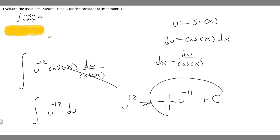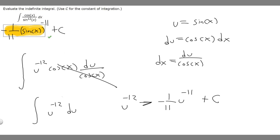Now that we've got this, all we've got to do is replace u with what we chose u to be, which is sine of x. If we go ahead and do that, we'll get minus 1 over 11 times u, which is sine of x raised to the minus 11 and then plus C. So this right here is going to be our final answer.